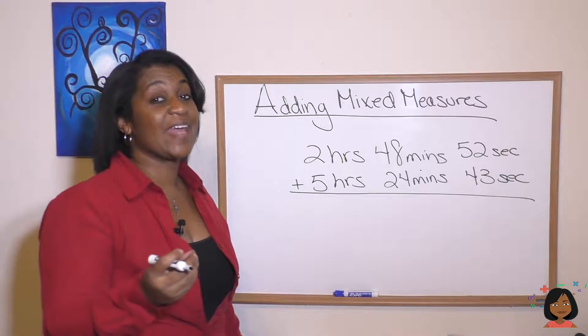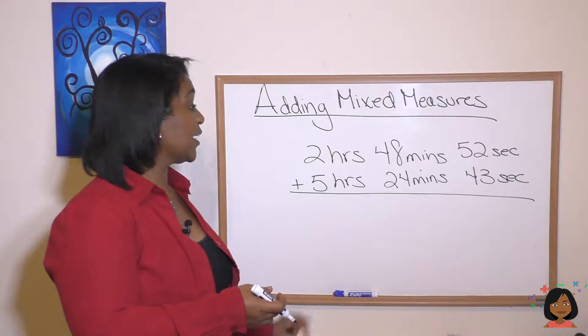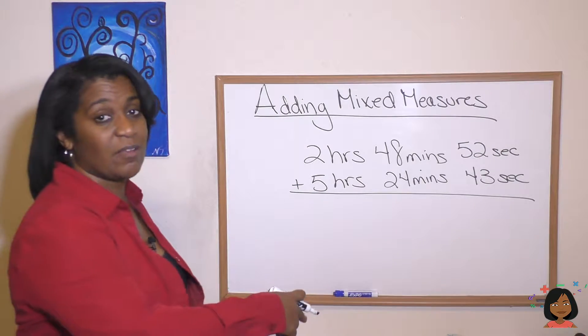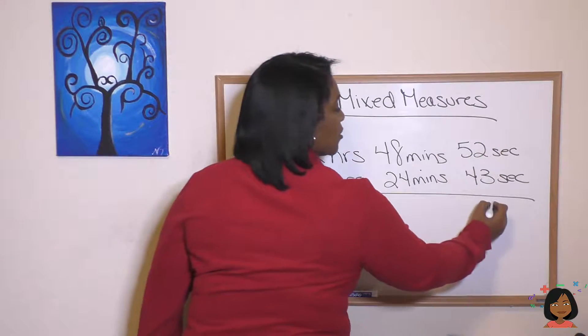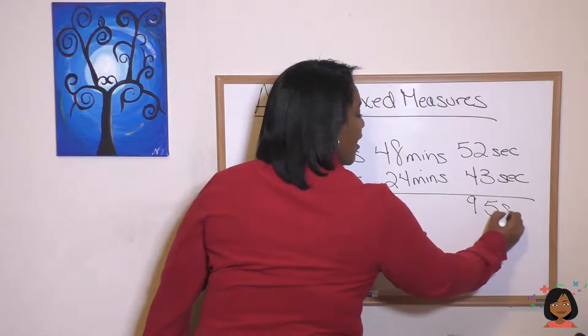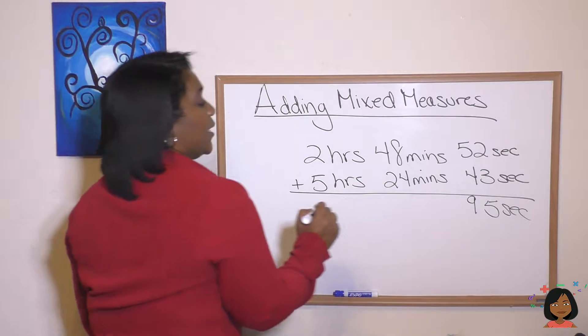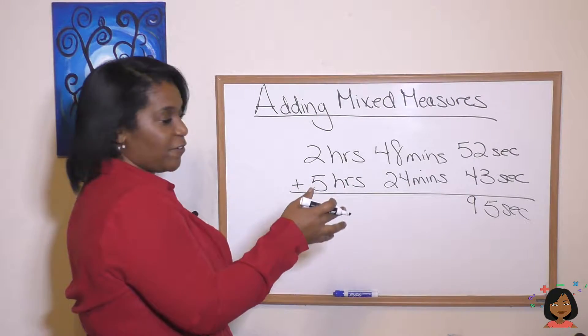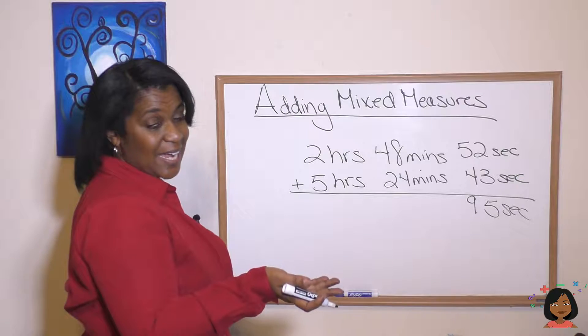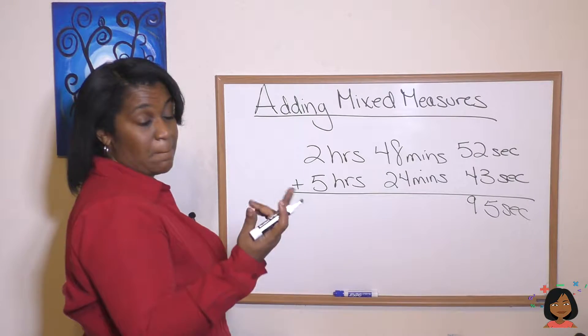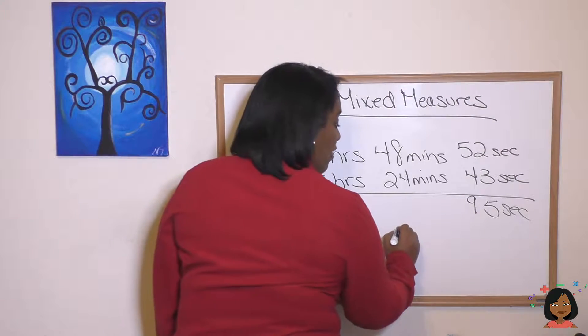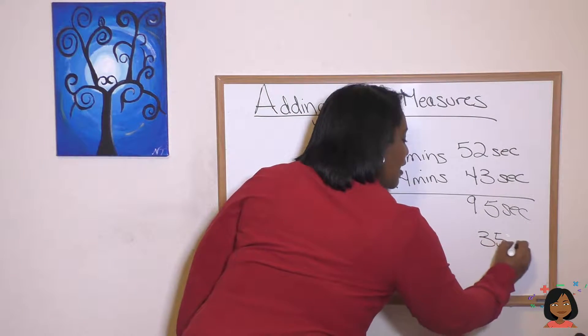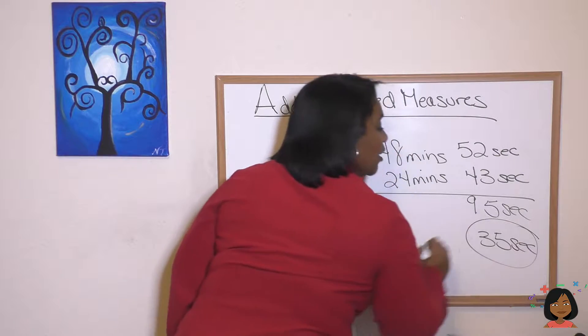This time, we're adding different measurements of time. So, we're looking at hours, minutes, and seconds. Well, let's start with the smallest one first. Three and two is five. Five and four is 95 seconds. Okay? And we could do one of two things. We could go all the way across, or we could stop here and do a conversion. We know there's 60 seconds in one minute, so we can know that one minute's going to come over here, and we're going to have 35 seconds left over. I'm going to circle it because I know I'm done with that one.